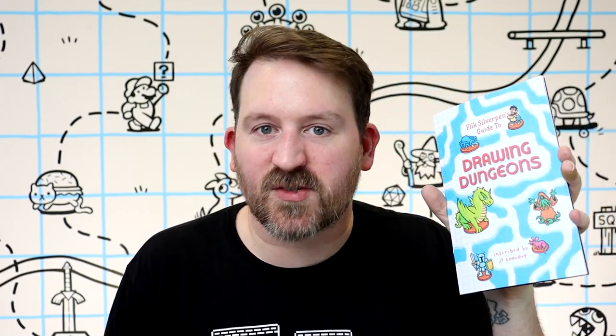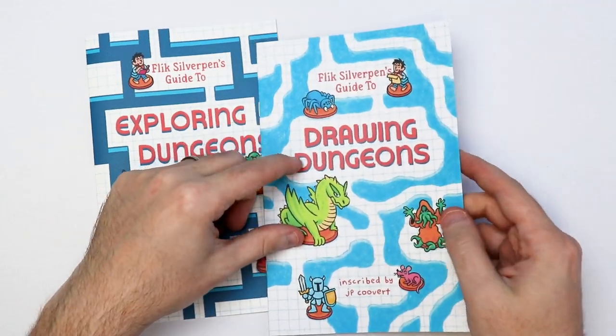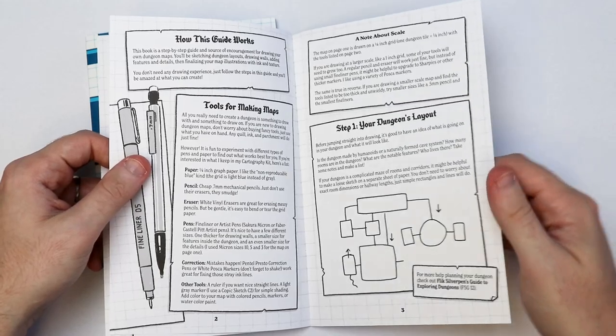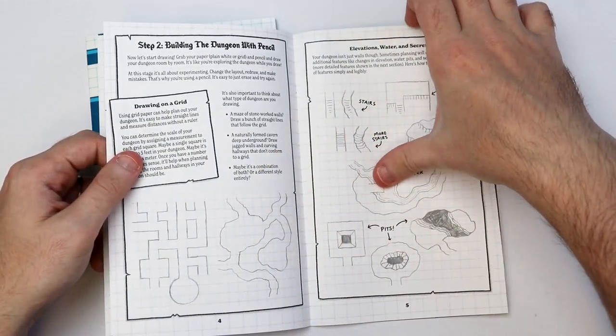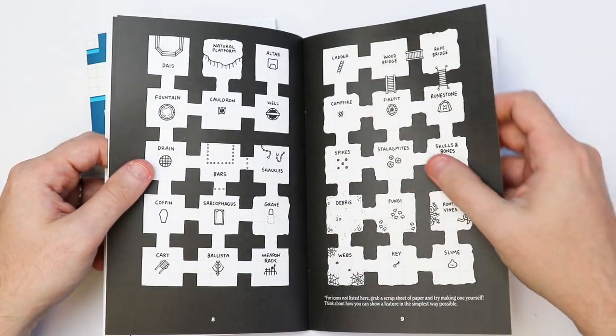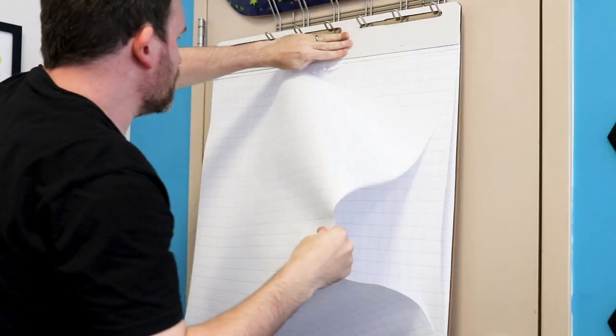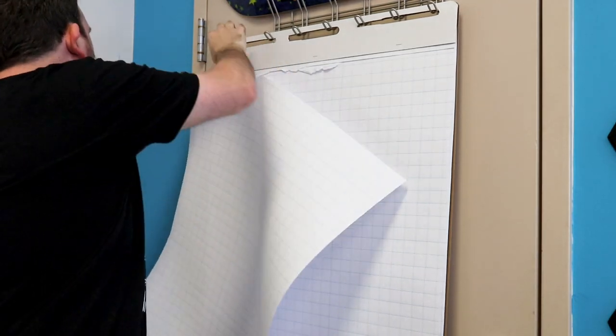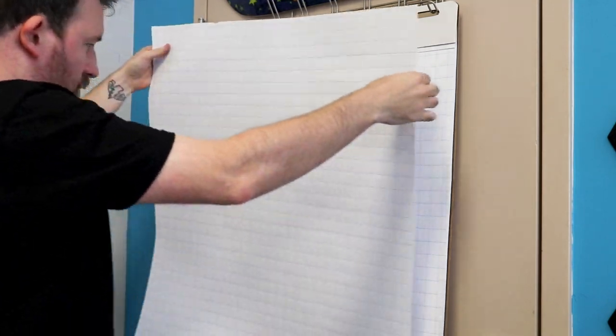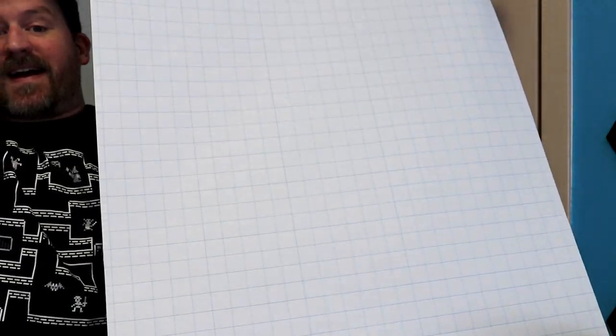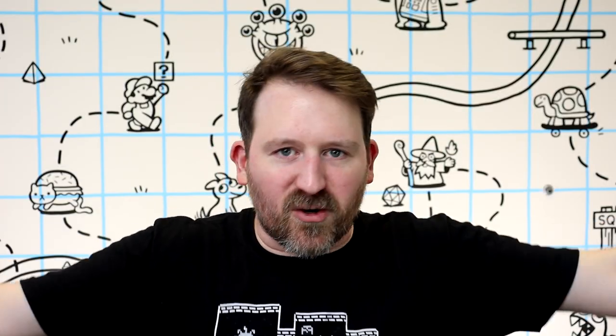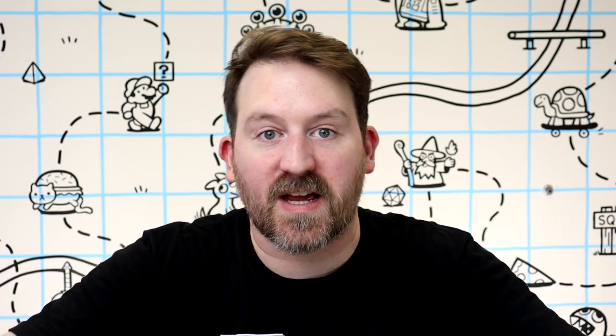Let's jump into Flick Silverpin's Drawing Dungeons. This guide explains tools to use and how to plan your dungeon layout, starting with a sketch and filling the dungeon with cool simple icons. For this video I want to draw a big dungeon map, so I've got this pad of big 26 by 32 inch grid paper that I just love to draw on.